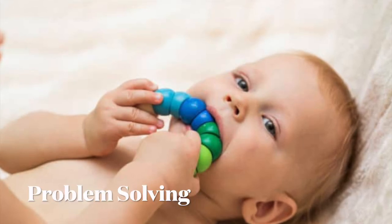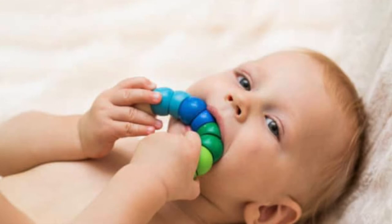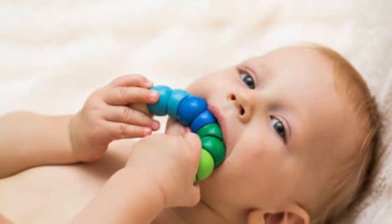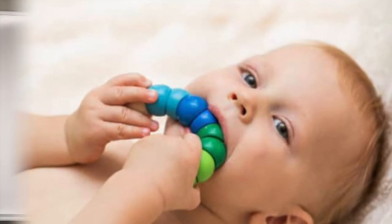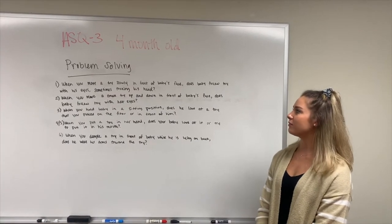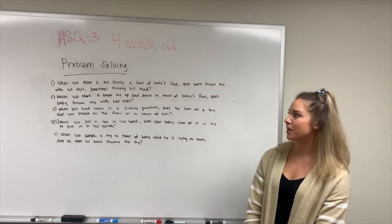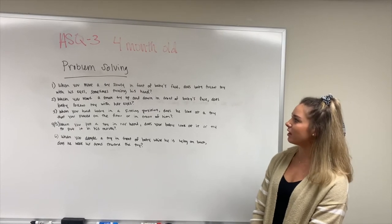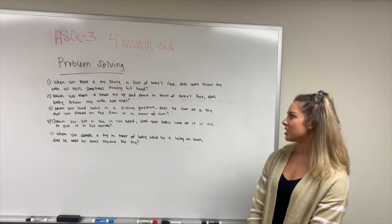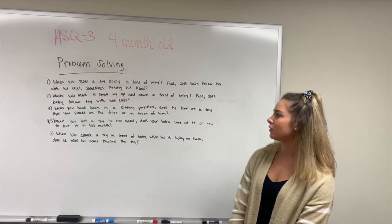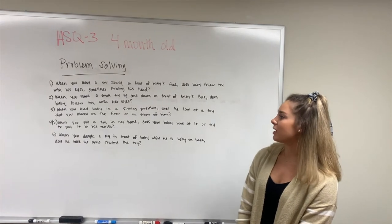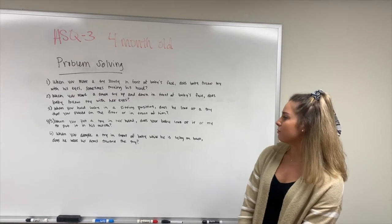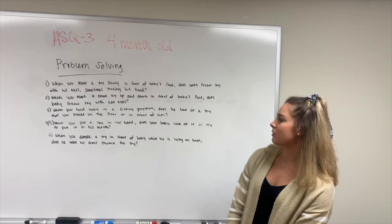As problem-solving skills continue to develop in the four-month-old, you may see them become more interested in toys — for example, if you wave one in front of their face, they may start to grasp toward the toy or even put it in their mouth. ASQ-3 problem-solving questions include: When you move a toy slowly in front of baby's face, does baby follow the toy with his eyes, sometimes turning his head? Does baby follow a small toy moved up and down with her eyes? When held sitting, does he look at a toy placed on the floor in front of him? When you put a toy in her hand, does your baby look at it or try to put it in her mouth? When you dangle a toy in front of baby while he is lying on his back, does he wave his arms toward the toy?